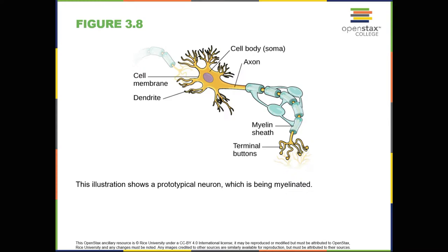Neuron structure. As seen in Figure 3.8, neurons are the central building blocks of the nervous system, 100 billion strong at birth. Like all cells, neurons consist of several different parts, each serving a specialized function. A neuron's outer surface is made up of a semi-permeable membrane. This membrane allows smaller molecules and molecules without an electrical charge to pass through it, while stopping larger or highly charged molecules.